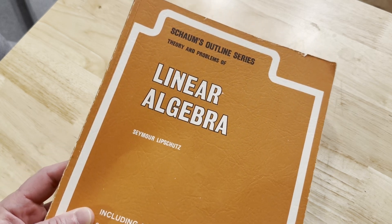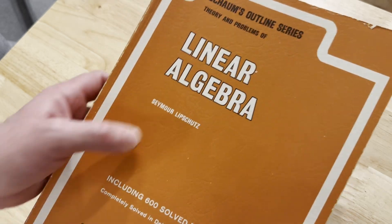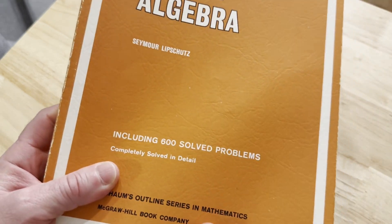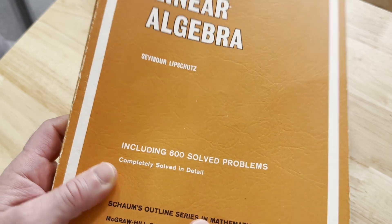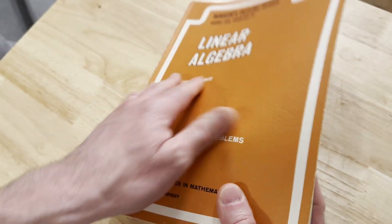This is the Schaum's Outline series, Theory and Problems of Linear Algebra. This is by Seymour Lipschutz and it includes 600 solved problems, completely solved in detail. And you can see this is an older edition, super old and yellowed pages.